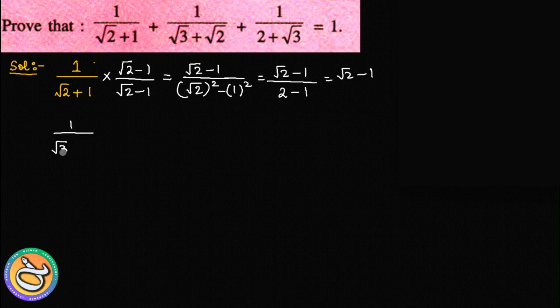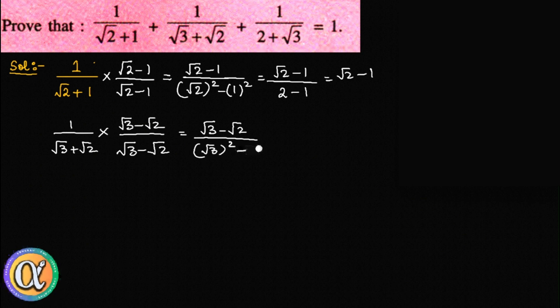Then the second one. Root 3 minus root 2. The same thing, root 3 minus root 2. The numerator root 3 minus root 2, the denominator root 3 square minus root 2 square. So root 3 minus root 2. 3 minus 2 is 1, so the answer is root 3 minus root 2.